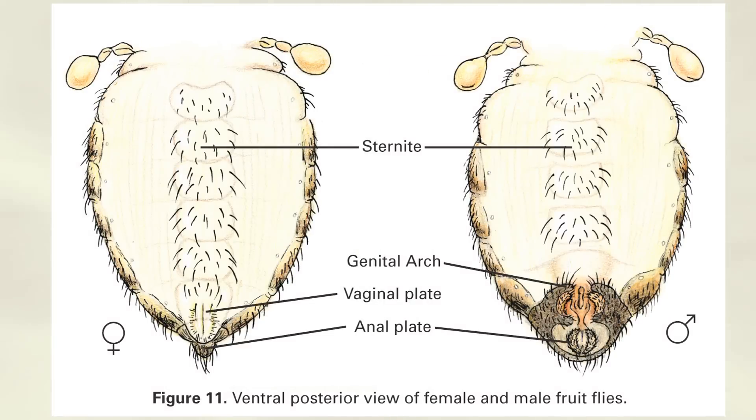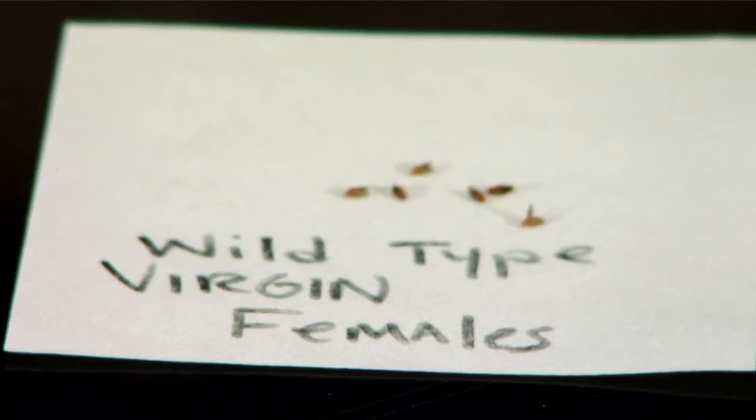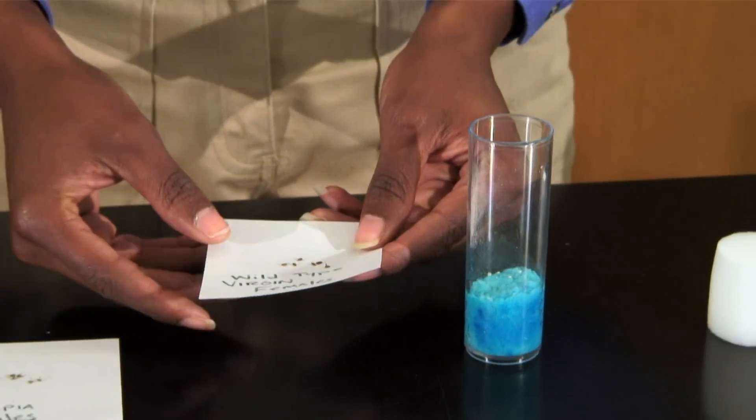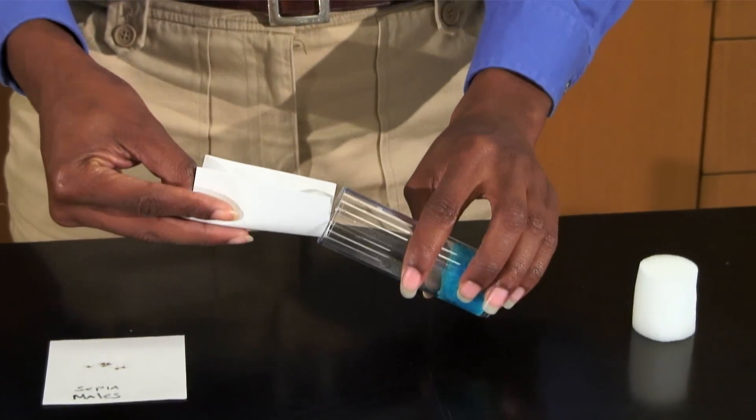Sexing flies is important when culturing Drosophila and making genetic crosses. Once all females have been confirmed as virgins, anesthetize them and the males needed to perform the cross. Add six virgin females and males to each new vial.